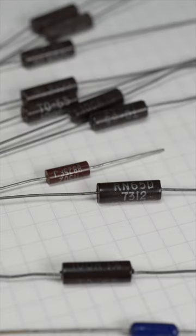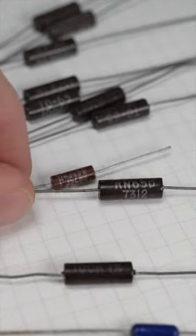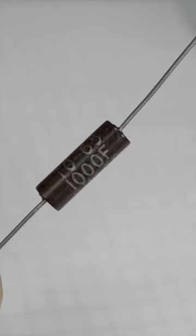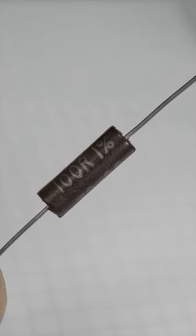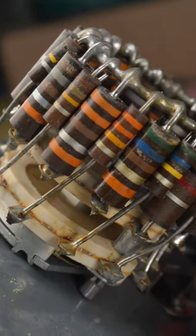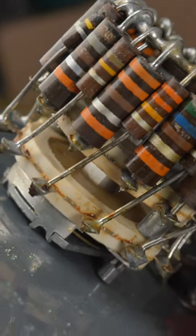In the early days of electronics, printing tiny numbers on little cylinders was a relatively costly process. To keep costs low, manufacturers established the resistor color code and used simple stripes instead of characters.